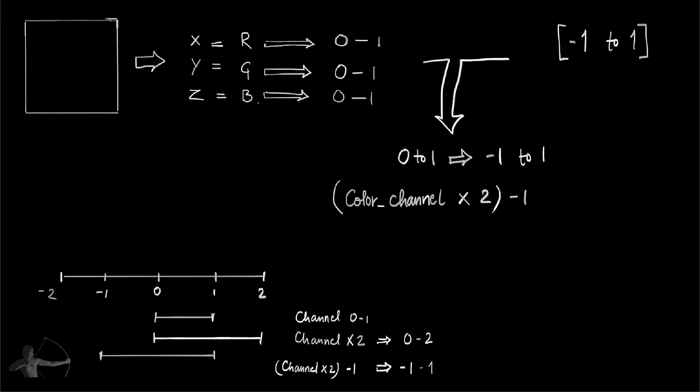Then another input is the normal map. We embed the normal XYZ value in the RGB channel, and the color range in Unity shader is from 0 to 1, it's not from 0 to 255. It's from 0 to 1, and the range of the normal is from negative 1 to 1.